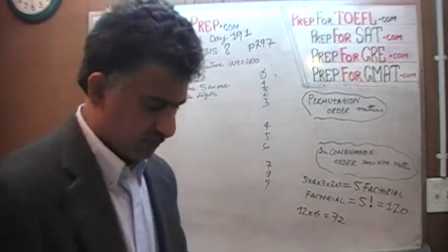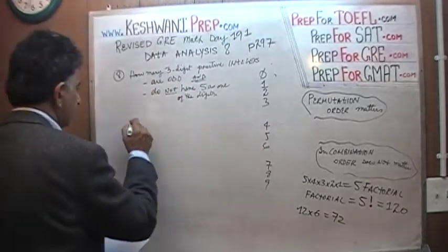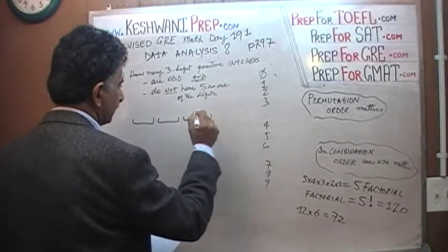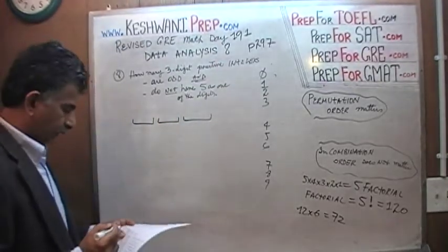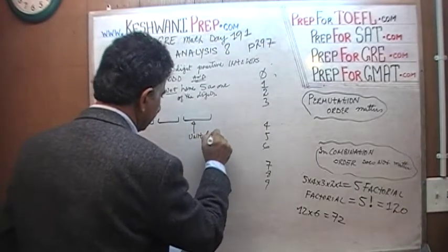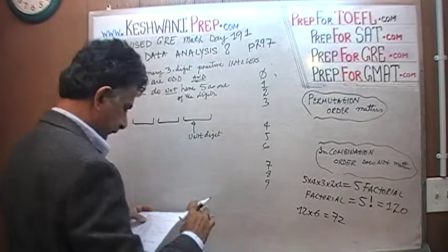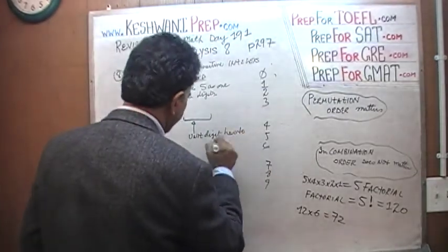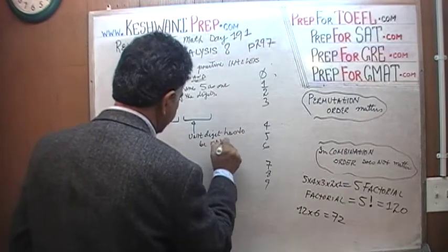And we have a 3-digit integer. Right here is our hundreds digit, this is our tens digit, this is our unit digit. And we know that the unit digit has to be an odd one, has to be odd.